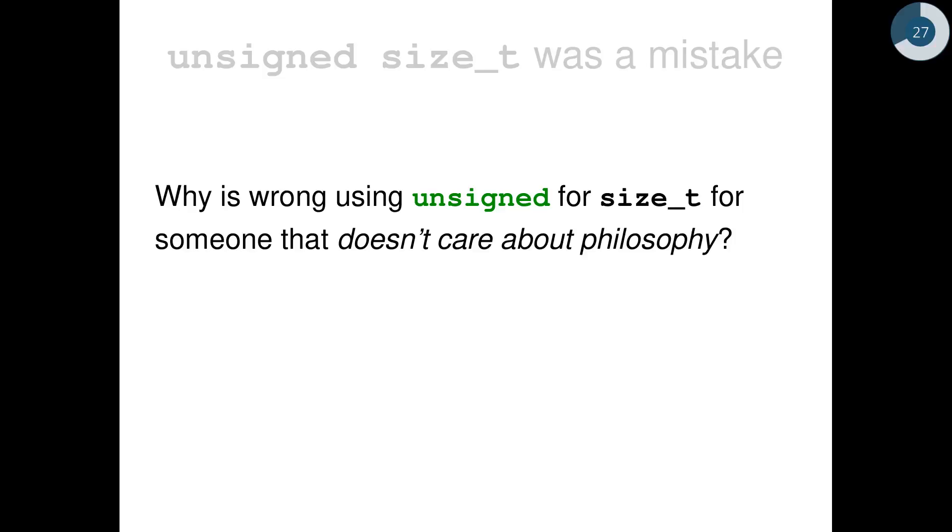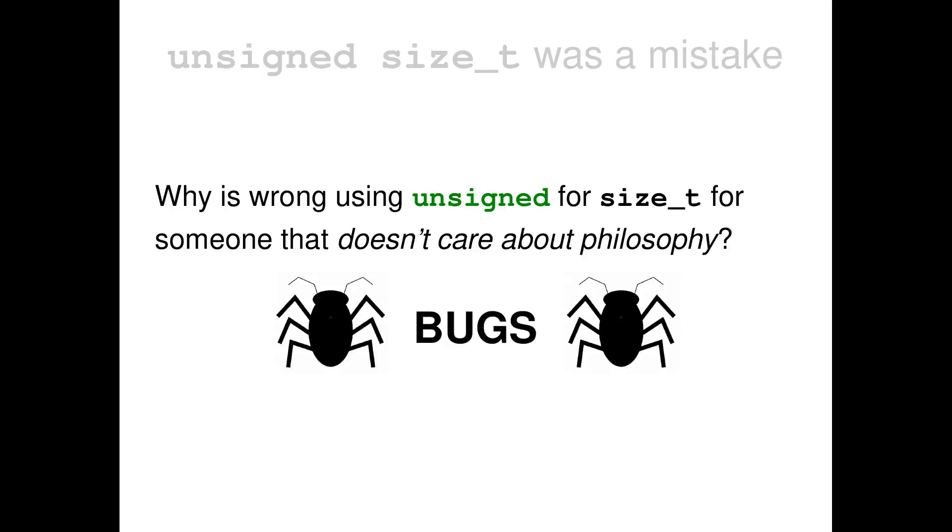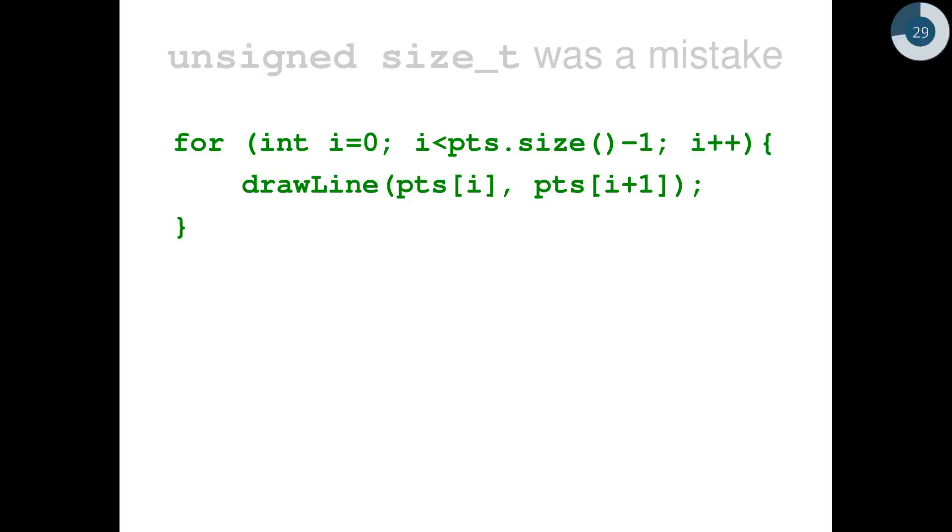Okay, but you may say, what is wrong using an unsigned for size_t if we don't care about the philosophy? The problem are bugs. There are really many bugs. In my experience, they happen quite often because of this design mistake. Because size_t is an unsigned type for standard containers. I will just focus on one single case, but there are many of them. In this case, I'm trying to draw the code.